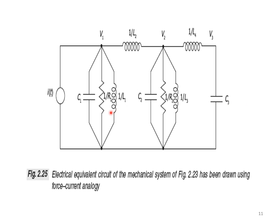This is the electrical network drawn for the given mechanical system. The network looks similar to the mechanical network previously drawn. Mass is replaced with C, spring with 1/L, and dashpot with 1/R. Replacing the corresponding elements gives the electrical equivalent network for the given mechanical system.